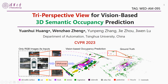Hello and welcome. I'm Wen Zhao Zheng from Tsinghua University. I'm glad to introduce our TPVFormer here, which is an efficient and effective model for vision-based 3D semantic occupancy prediction. Given only surround camera RGB images as inputs, our model trained using only sparse lidar point supervision can predict the semantic occupancy for all volumes in a 3D space.